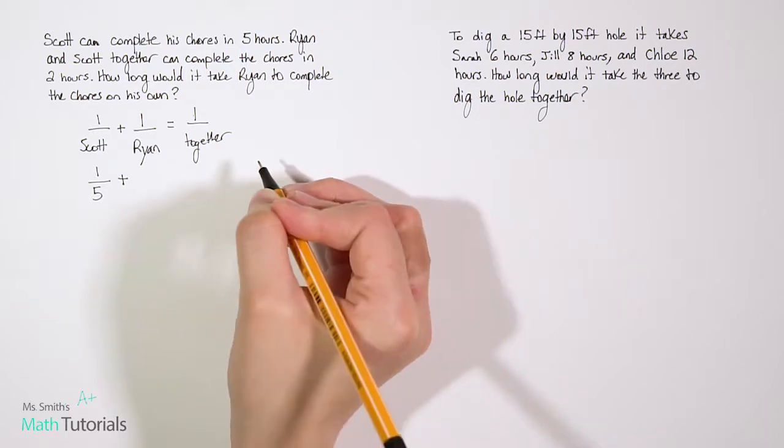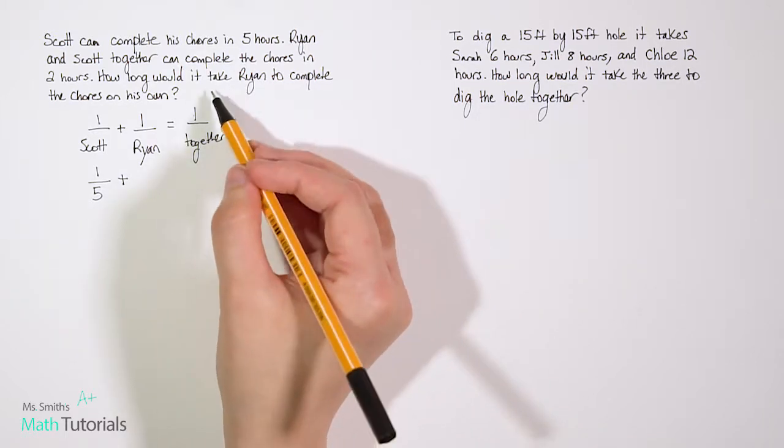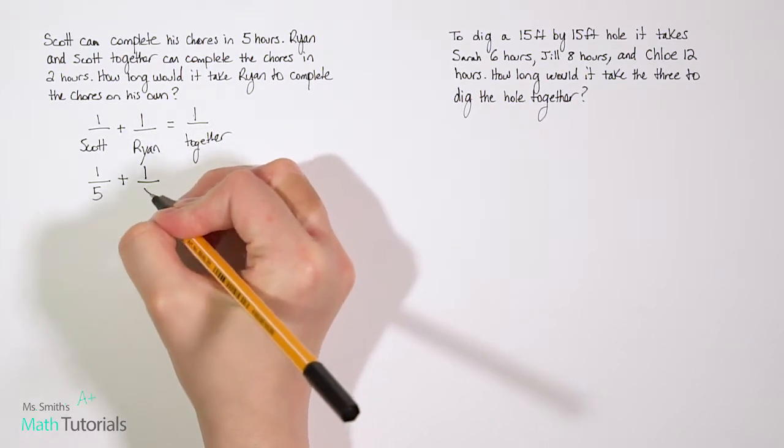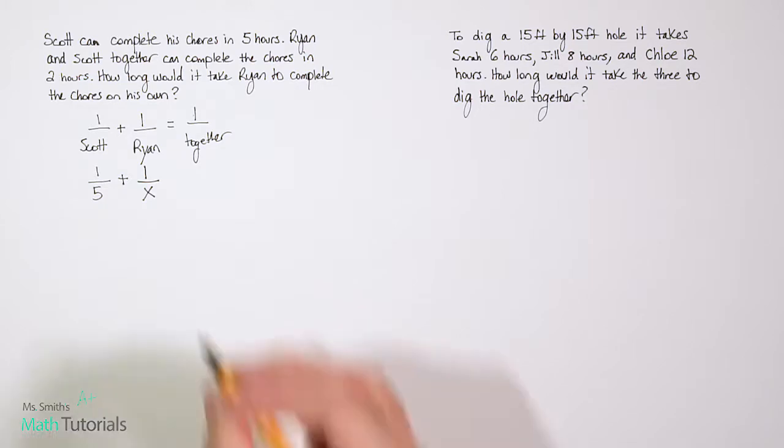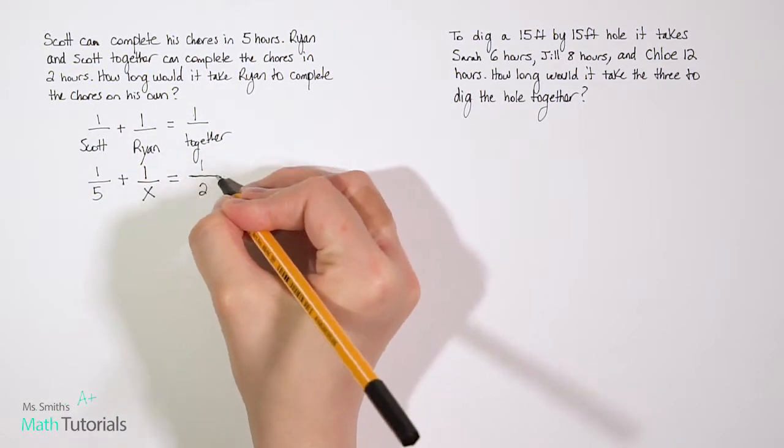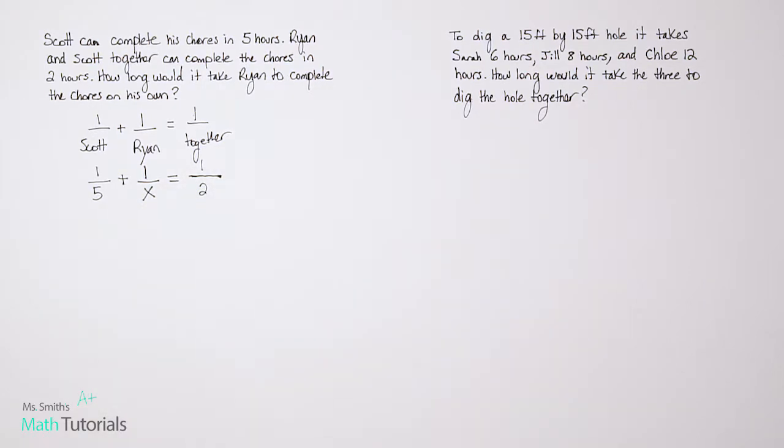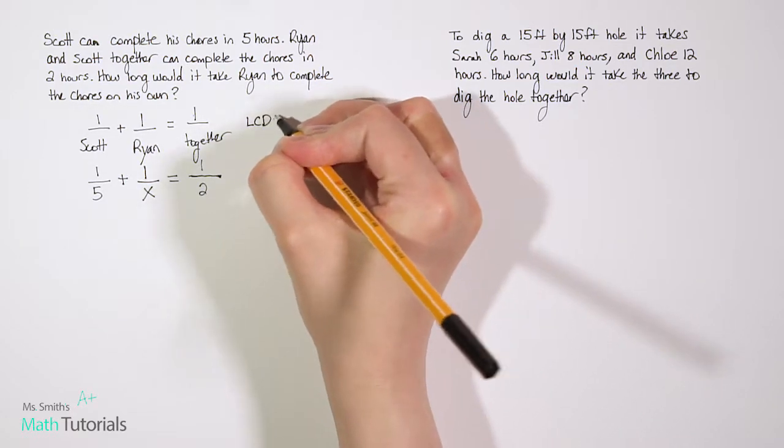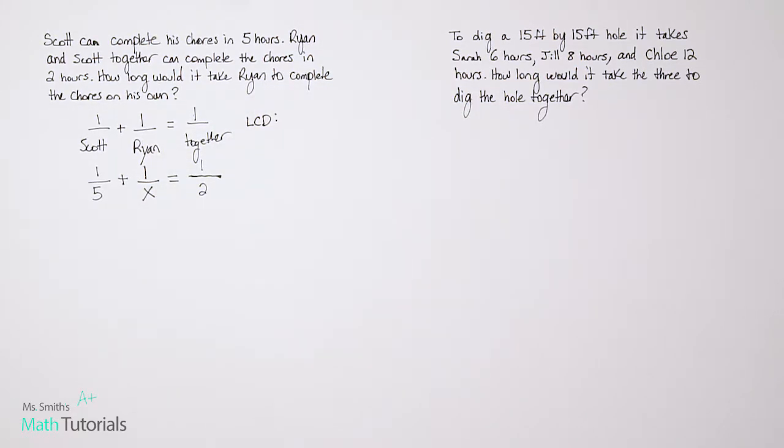It takes Scott and Ryan together two hours. What we're wanting to know here is how long it would take Ryan alone. So this time our x goes for Ryan. That's what we're wanting to know, because we know that together it takes them two hours. So it's important to understand the difference. You really have to look at what are they asking you for. Ryan is the x in this case.